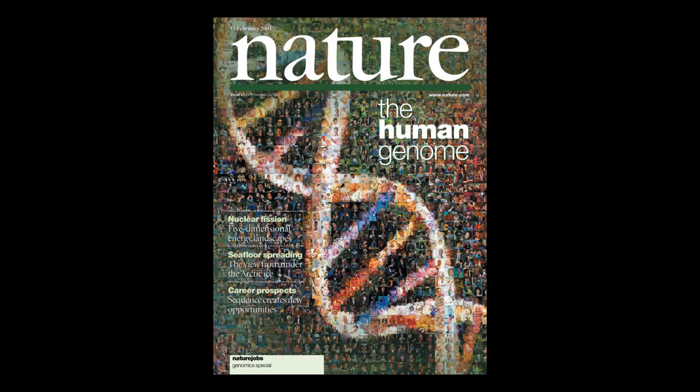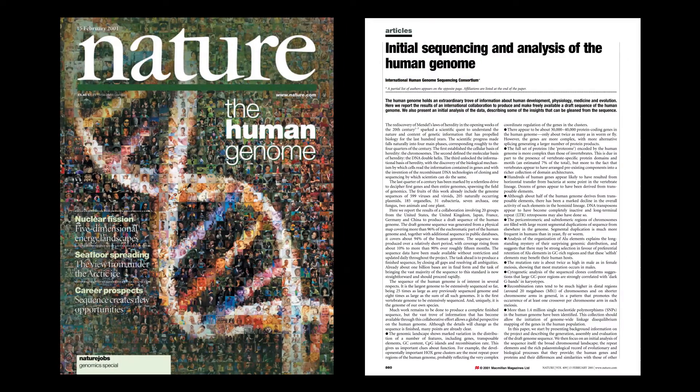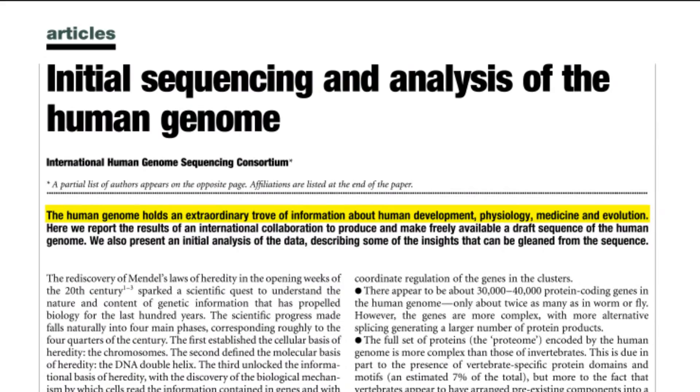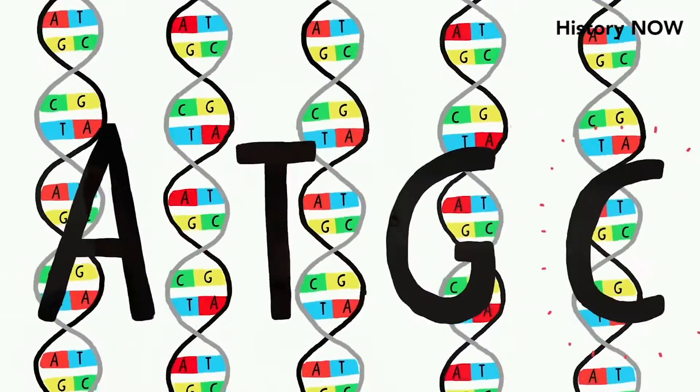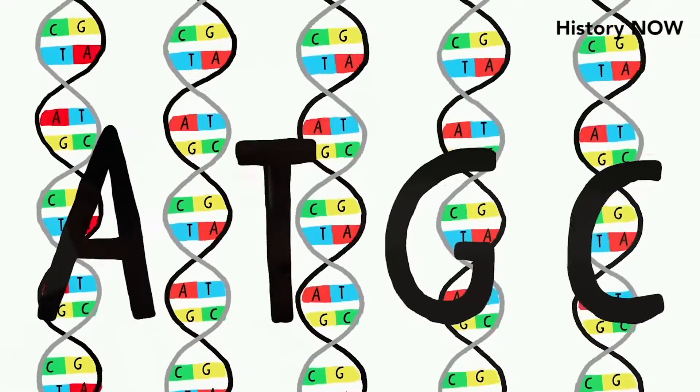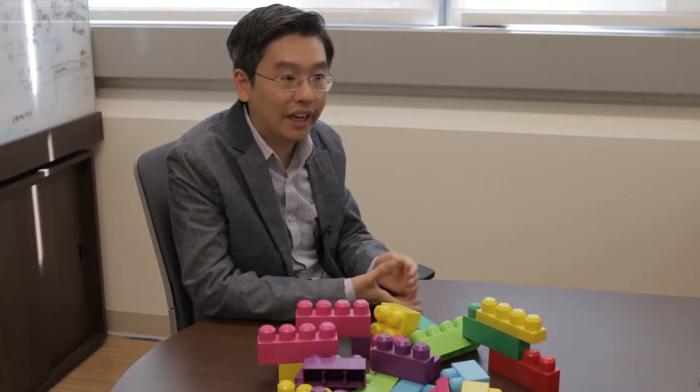The Human Genome Project set out to determine our genetic makeup. So what were the A, C, Gs, and Ts that make up our genome? And this took over a decade of time, billions of dollars in investments. And we get to a point where basically we know our genetic content.